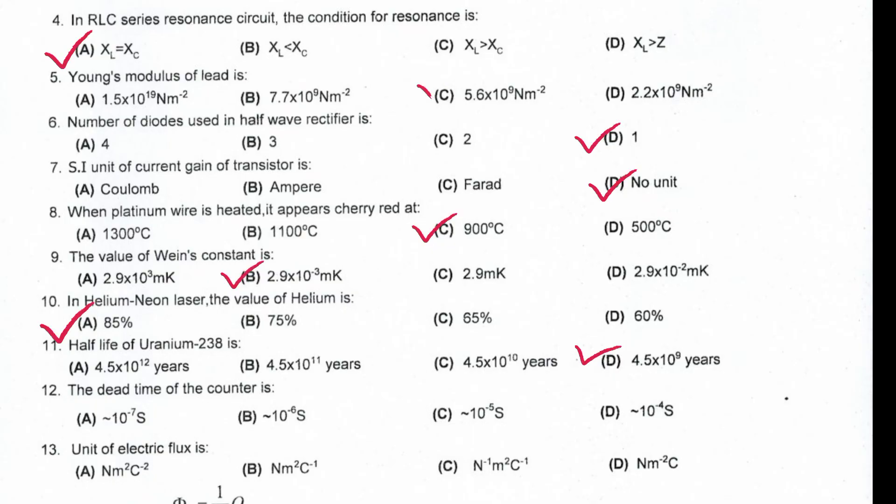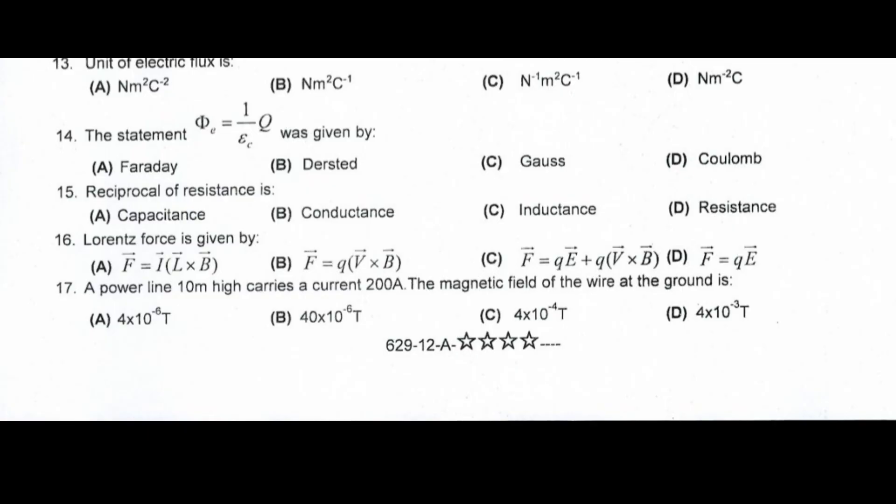The dead time of counter is 10 to the power minus 4 seconds. Unit of electric flux is Nm square per coulomb. The statement electric flux 1 over epsilon K was given by Gauss.